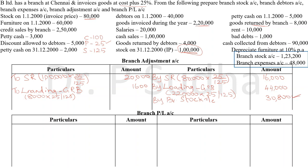This 30,800 is the value transferred from branch stock account to branch adjustment account when we were preparing the branch stock account. After tallying the branch adjustment account, the total is 90,800 on both sides. The credit total is more than the debit total, so the balancing figure on the debit side is 69,200. This will be transferred to branch profit and loss account, and this figure also represents the gross profit of the branch.